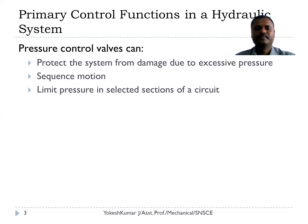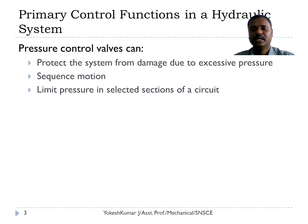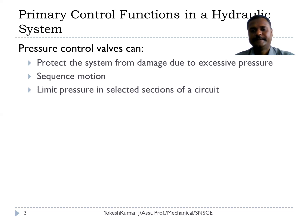One is to protect the system from damage due to excessive pressure. Because of various reasons — say for example, due to blockage in the hydraulic tubes — there may be a chance of developing excessive pressure. This excessive pressure exceeds the safety limits of the tube or forces, which may cause explosion or bursting of tubes. In order to protect the system from the excessive pressure, we may use a pressure relief valve to relieve the excessive pressure so that we can ensure that the system will operate under the safety pressure.